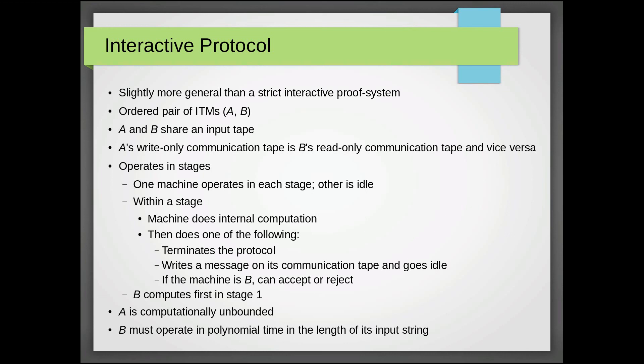Also note that B is the first machine to compute in stage one. So also note that A is computationally unbounded. It can use as many resources as it wants and take as much time as it wants. But we limit B to operating at polynomial time in regards to the input string. In other words, the sum of all its stages must be a polynomial computation of the input string.